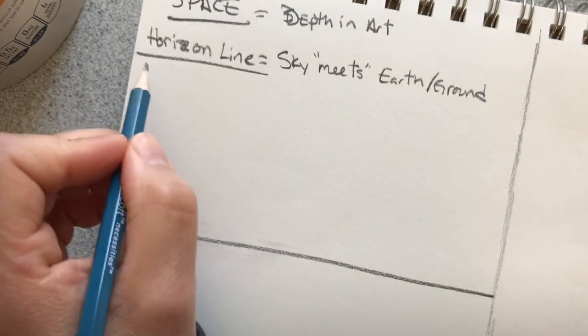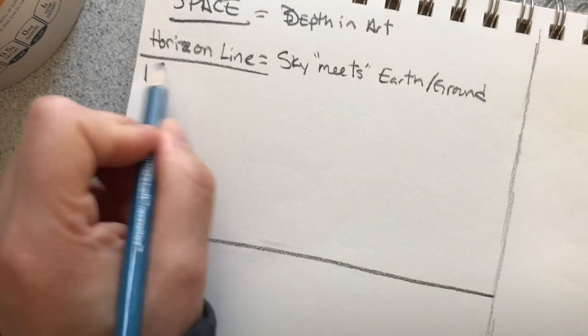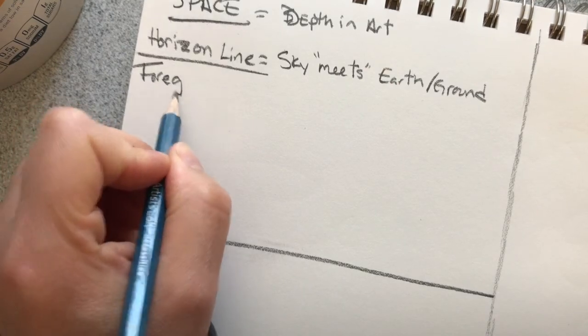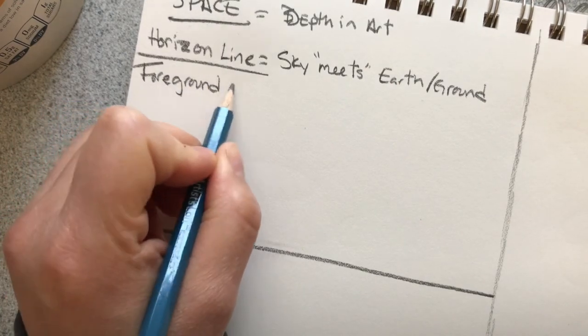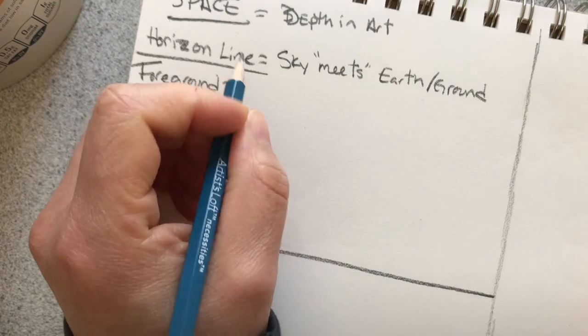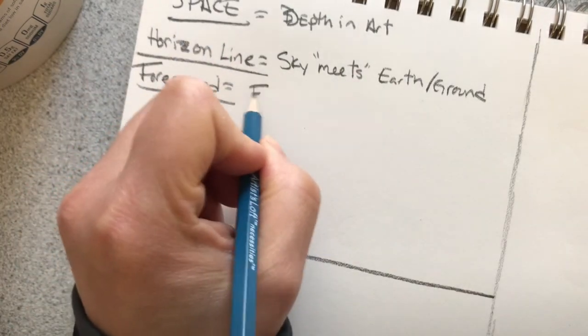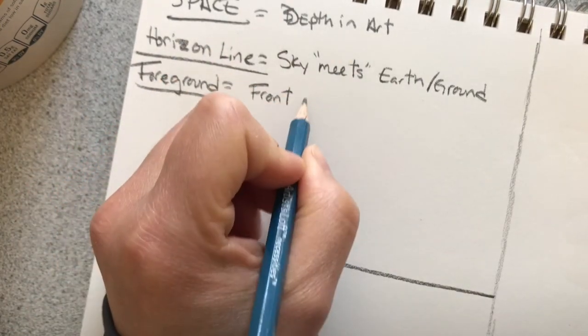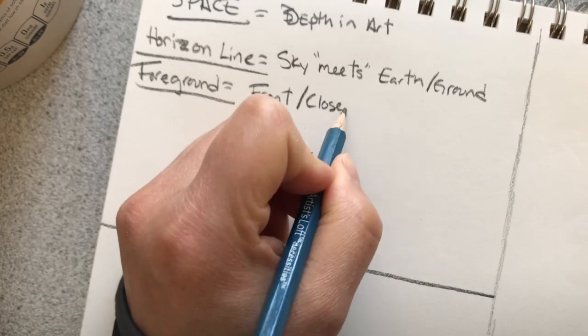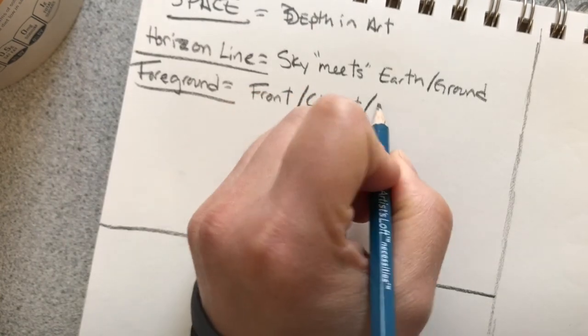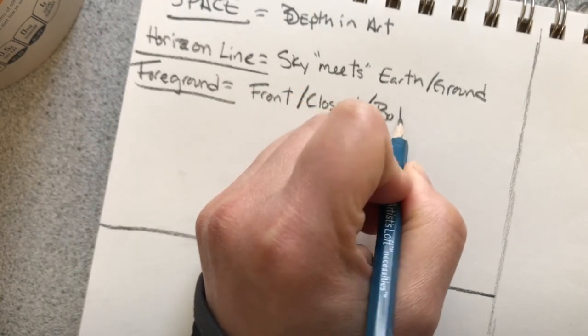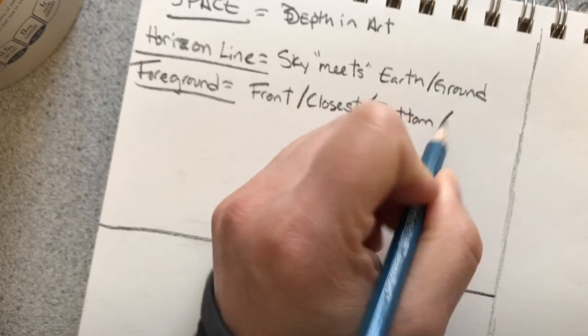The next one is the foreground. That is the stuff that's in the front. It's gonna be closest to the viewer, it's going to be drawn towards the bottom of the paper, and it's gonna appear to be the largest thing in your drawing.